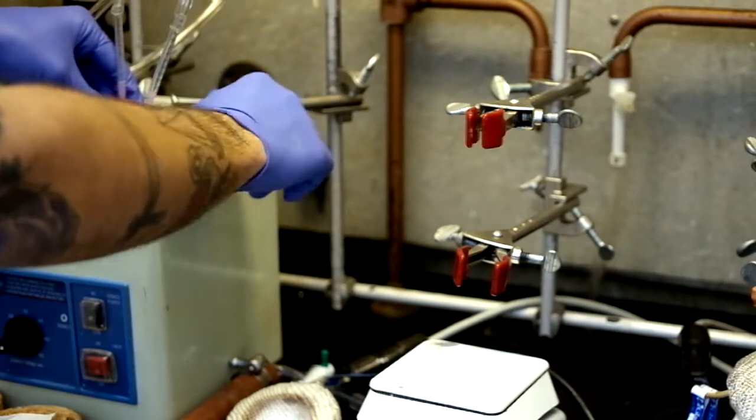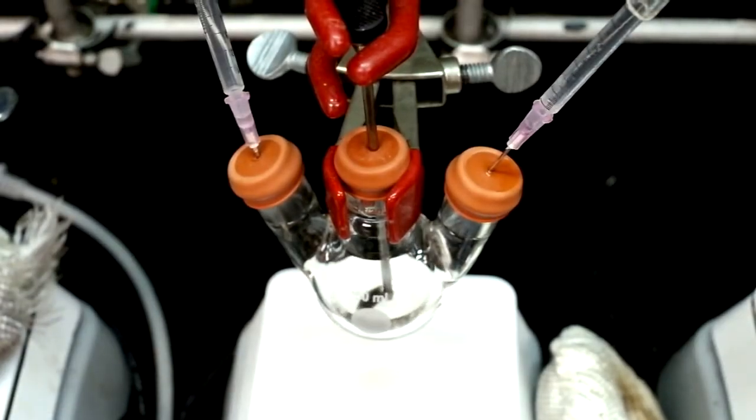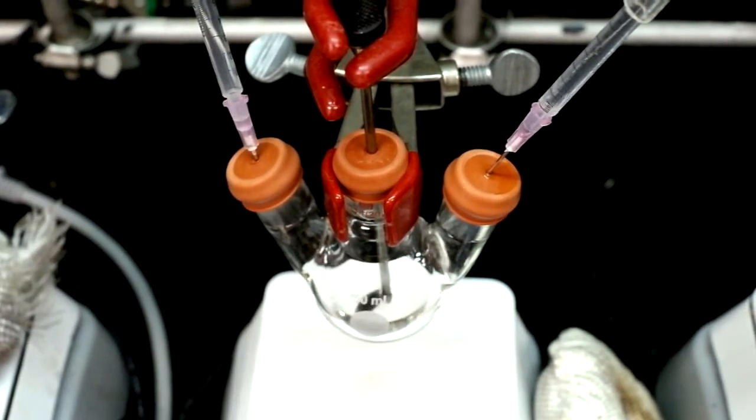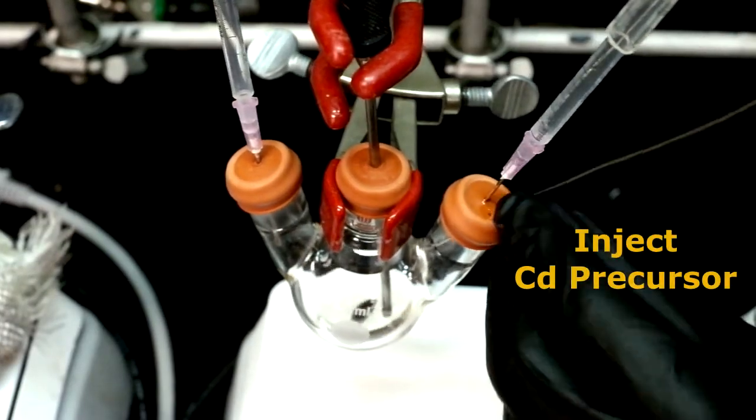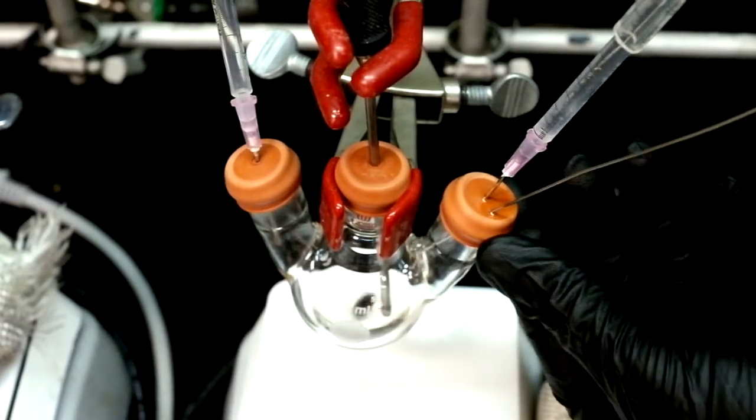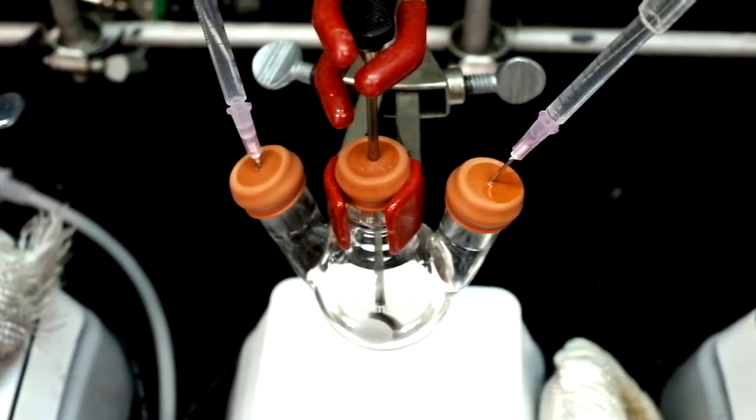Once the selenium solution has finished sonicating, it should be clear and there should be no powder left in the solution. At this point, we inject the room temperature cadmium solution into it. Set the flask aside and let the precursors mix.